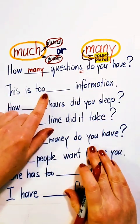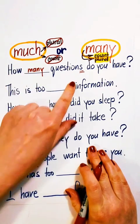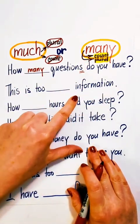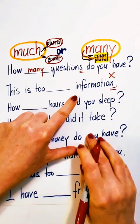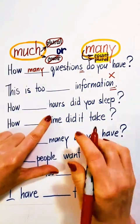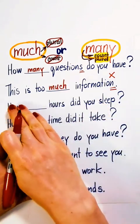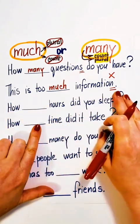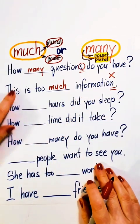This is too much or too many information? Information is a non-count noun. You cannot count it. Use much. This is too much information.